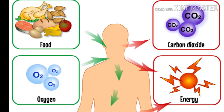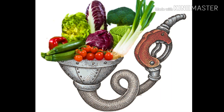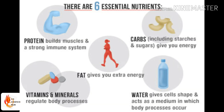To produce this energy, food substrate as well as oxygen is needed. This process is known as cellular respiration. So the energy required for different biological processes that take place in the human body can be obtained from food. We can consider food as a fuel for producing energy.